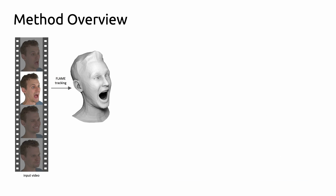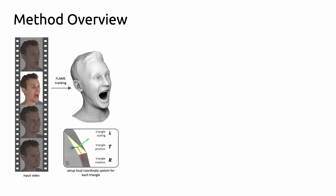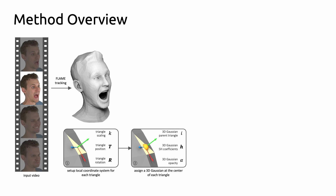The input to our method is a multi-view video recording of a human head, processed using a photometric head tracker to fit FLAME at each time step. We establish a local coordinate system for each FLAME triangle and initialize a 3D Gaussian splat at the origin, enabling the Gaussian splats to move with the triangles when the FLAME mesh is animated.